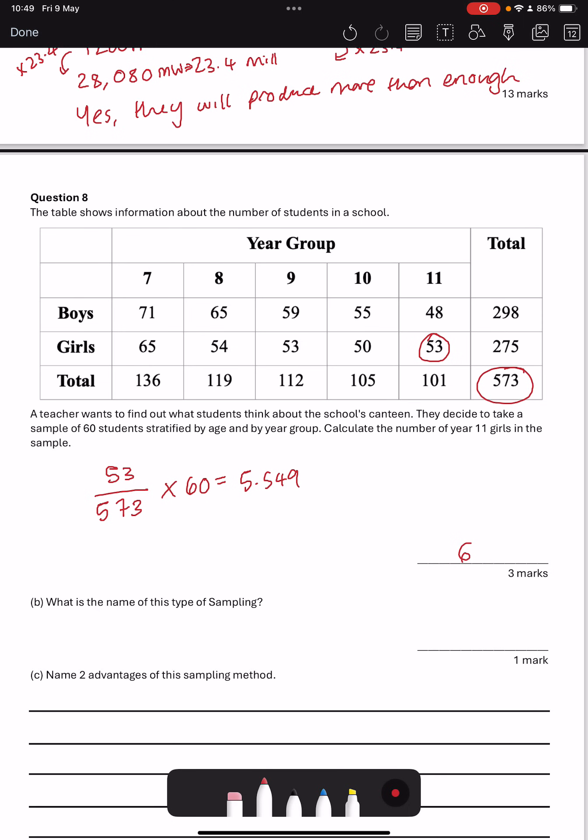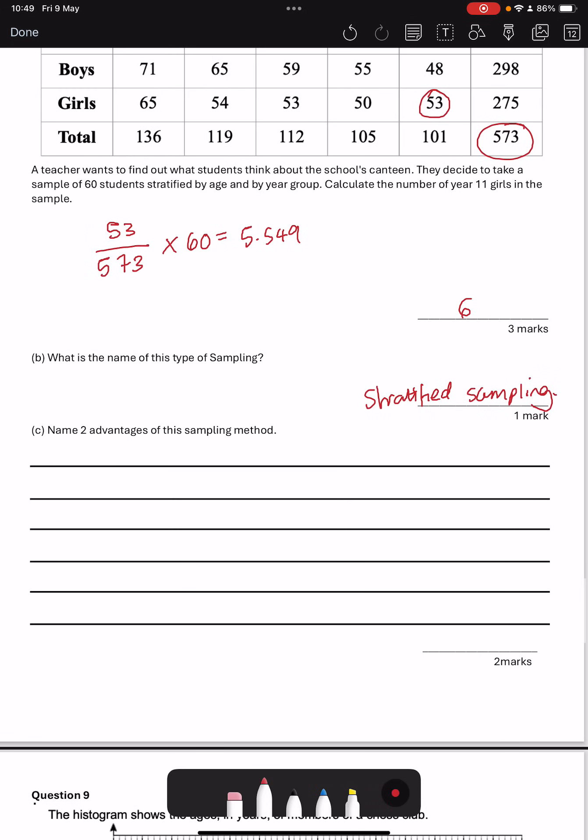5.549 And we'll round that up to 6 students. The name of this type of sampling is stratified sampling. That was given to us in our question. And then two advantages.